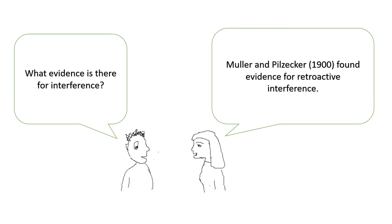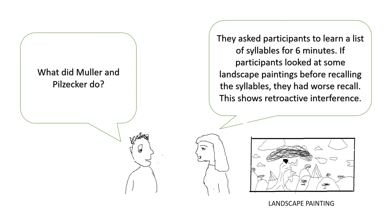So what evidence is there for interference? Müller and Pilzecker in 1900 found evidence for retroactive interference. They asked participants to learn a list of syllables for six minutes. If participants looked at some landscape paintings before recalling the syllables, they had worse recall. This shows retroactive interference — the newer information of the landscape paintings interfered with trying to remember the old information, the syllables.